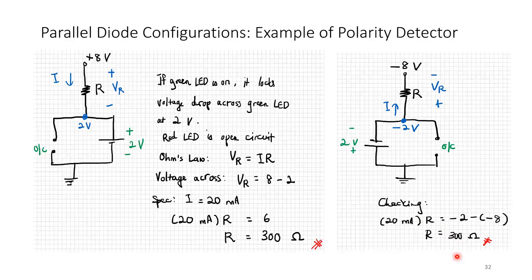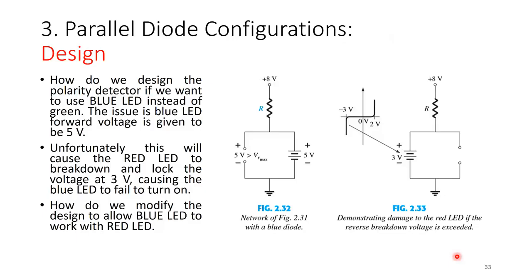Now a slightly more difficult design exercise: how do we modify the polarity detector if we want to use a blue LED with a forward voltage of 5 volts instead of the green LED at 2 volts?